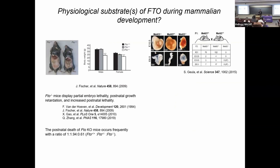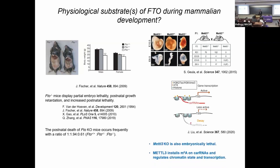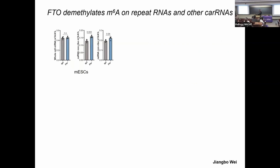This puzzled us for a decade. The answer came after we realized the methyl transferase not only installs methylation on messenger RNA but also on chromatin RNA — what we call chromatin-associated regulatory RNAs. We wondered: if FTO doesn't work on messenger RNA in most tissues, maybe it works on chromatin RNA. Constructing an FTO knockout in mouse embryonic stem cells, isolating messenger RNA showed only a tiny increase in methylation, but isolating chromatin RNA and depleting ribosomal RNA revealed a very nice 10–15% increase in total methylation.